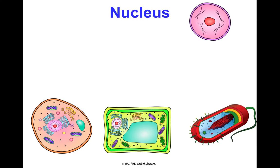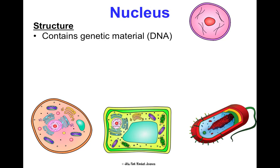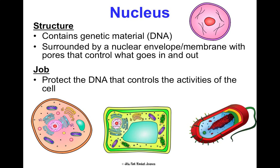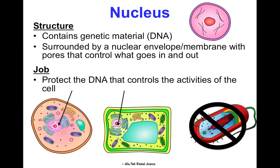The nucleus is one of the most important organelles in a eukaryotic cell. It contains your genetic material — you can see chromosomes, which are pieces of DNA, inside it. It's surrounded by a nuclear envelope or membrane that has pores, which allow things in and out of the nucleus. Its job is to protect your DNA, which controls all of the activities of the cell. The nucleus is present in animal and plant cells but not in prokaryotic cells — in bacteria, the DNA just floats around in the middle of the cell unprotected.